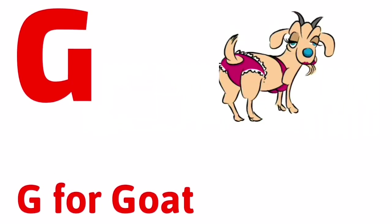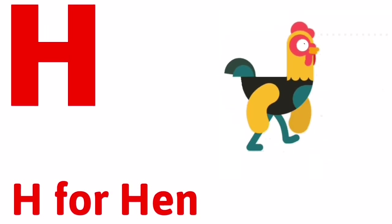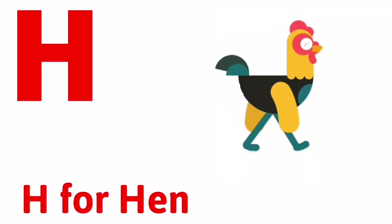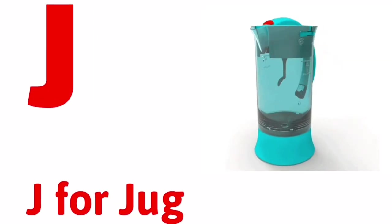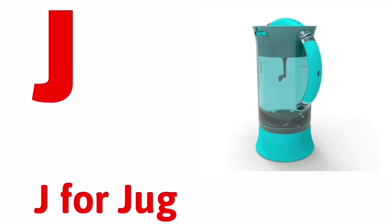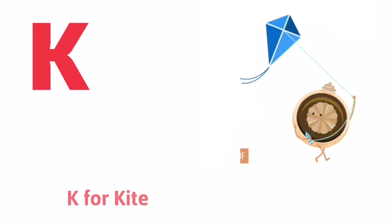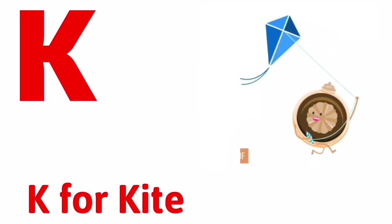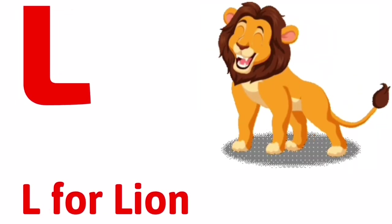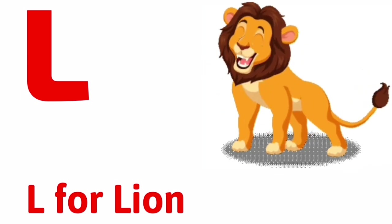G for goat, H for hen, I for ice cream, J for jag, K for kite, L for loin.